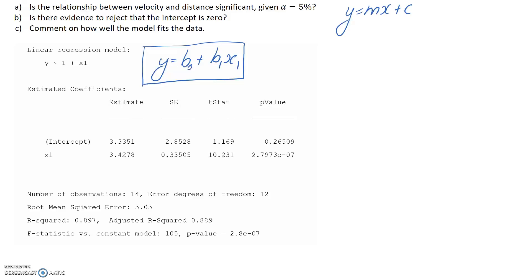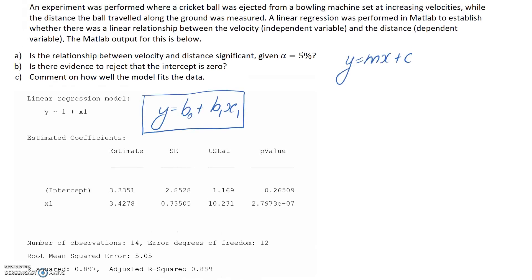So if I now relate the y and the x to the actual variables that we're looking at in our equation, we were actually told which one's which, but the independent is going to be velocity, and the dependent is going to be distance. So we can write this as distance equals some constant, which is b0, plus b1, another constant or coefficient, multiplied by the velocity.